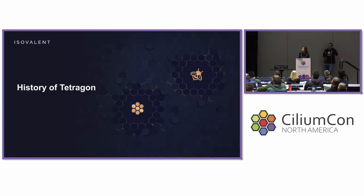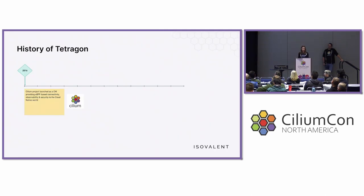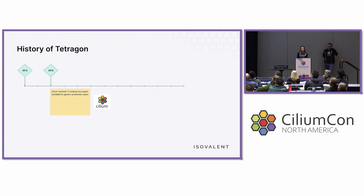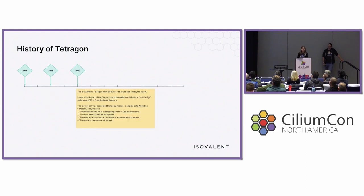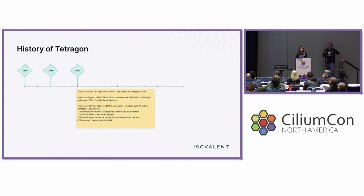So that was a quick intro on Tetragon. Let's take a step back and think about the history. Starting from 2016, that was the year when the Cilium project launched as a CNI, providing eBPF-based connectivity, observability, and security to the cloud-native world. In 2018, Cilium reached 1.0, making the project available for generic production users. And then in 2020, the first lines of Tetragon were written — but not under the Tetragon name. This was initially part of the Cilium Enterprise code base with a code name: Hubble FGS, where FGS stands for Fine Guidance Sensors.